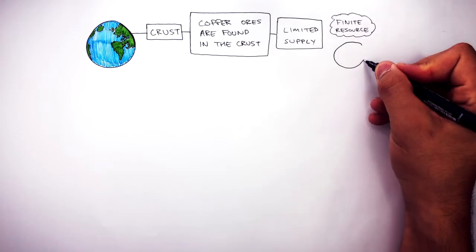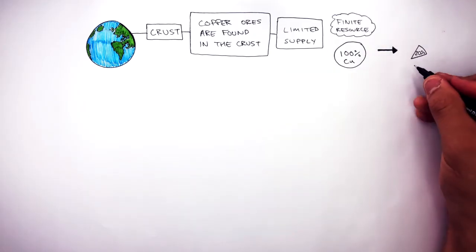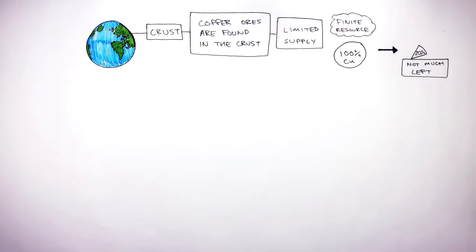So let's say we had 100% copper, and in many years after using a lot of the copper, there may only be, say, 20% left. This means there's not much left because we've used a lot of the copper and we have not replaced it at the same rate as which we've used it. So copper is a finite resource.